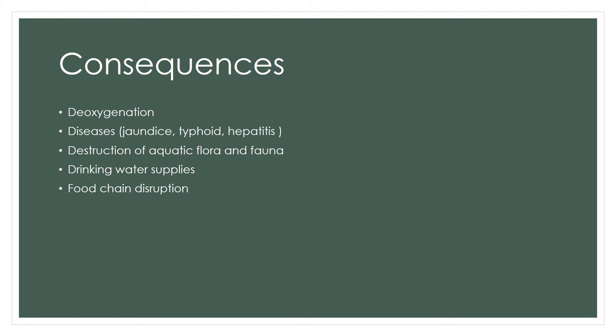Next is waterborne diseases like jaundice. If the water condition is not okay, we suffer from all of these diseases. There will also be a decline in clean drinking water supply, and the food chain of marine life is going to be disrupted because of water pollution.